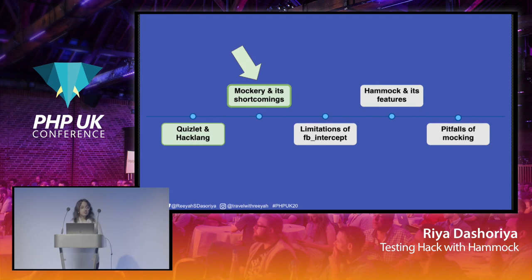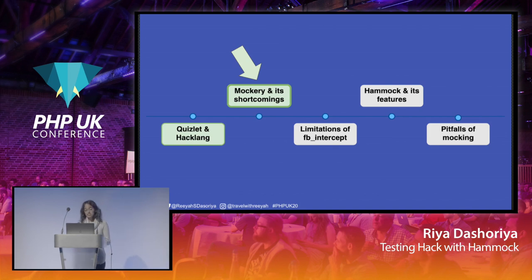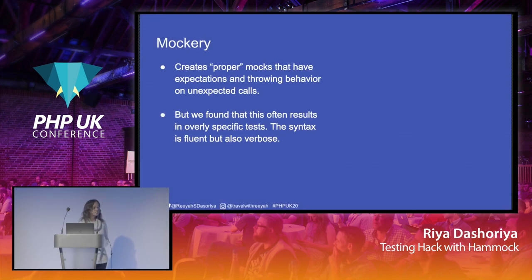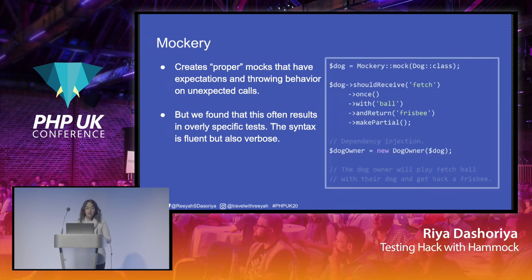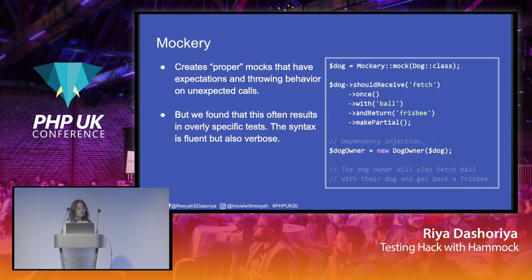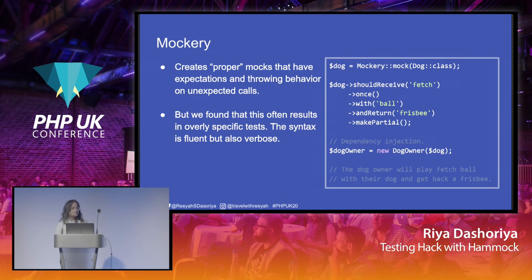Our entire codebase is now in Hacklang. We all need to do some sort of testing, so we started using Mockery to test our backend code. Mockery is a PHP mocking library based on the Liskov substitution principle. It derives a mock class from a real class, and the mock class supports all the interfaces of the real class. The mock object will have expectations and throwing behavior on unexpected calls. In this example, we are mocking a Dog class — the Dog mock object uses expectations such as 'should receive fetch' as a method, passing the arguments and what it should return.